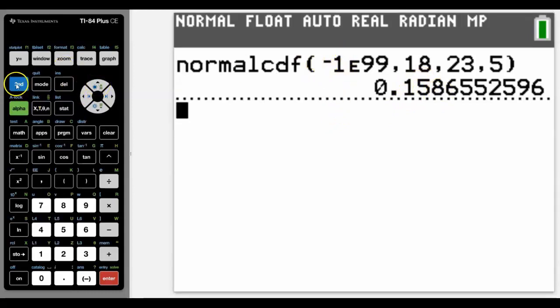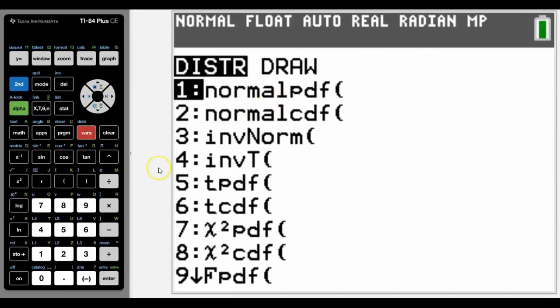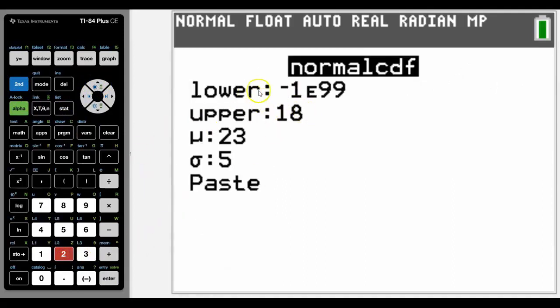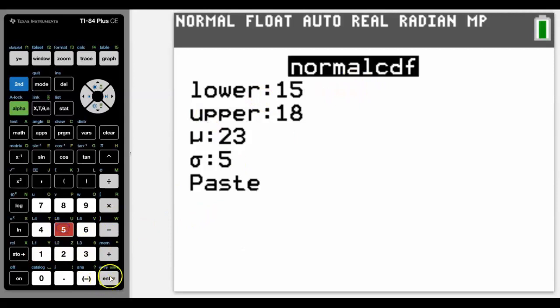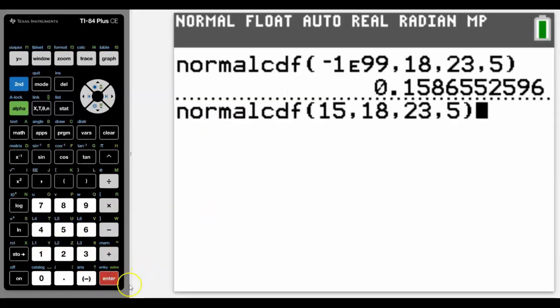If we want to between bounds, then we can either go back into it again and just change the lower bound, say to, let's go 15 this time, come down and use it again.